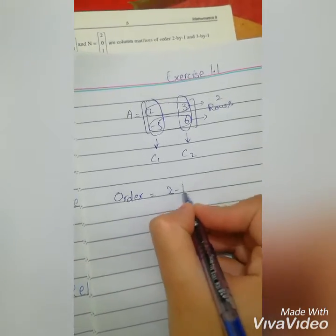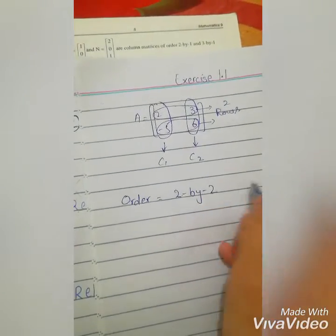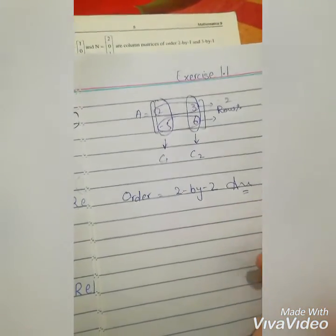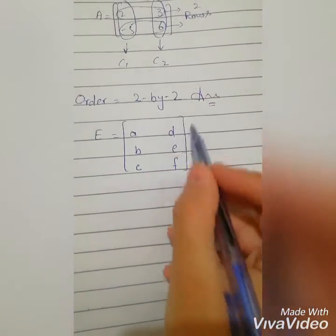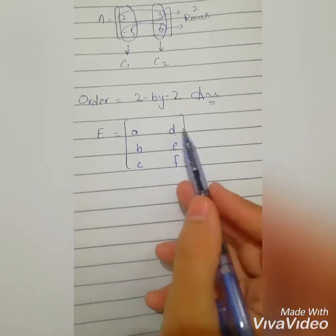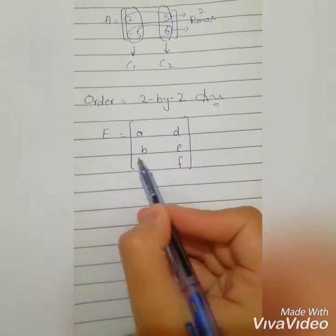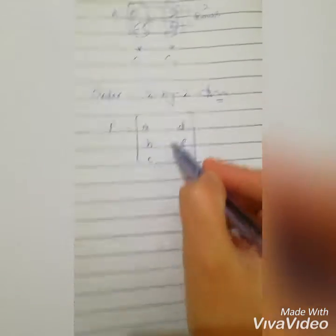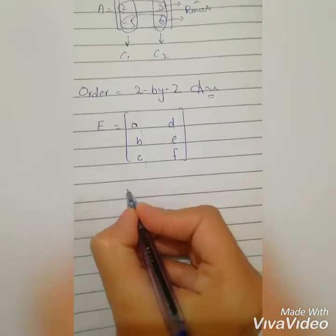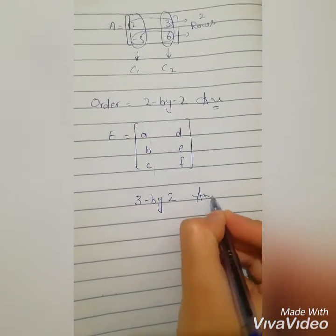Two rows, two columns - this is the answer. All questions are like this. Now we have E-metrics. This entire column - what will be the order? This is one row, this is another row, and this is one column and another column. So the order is 2 by 2.